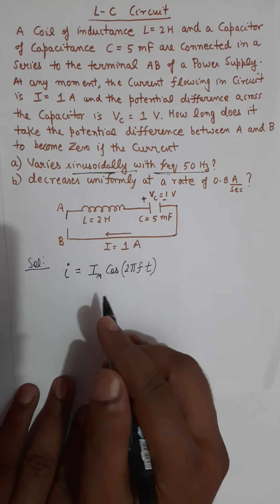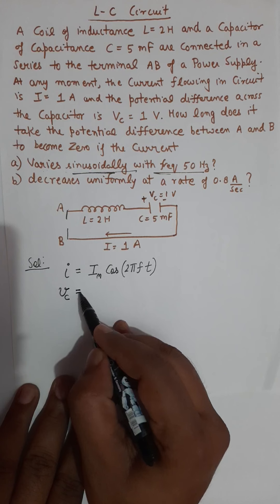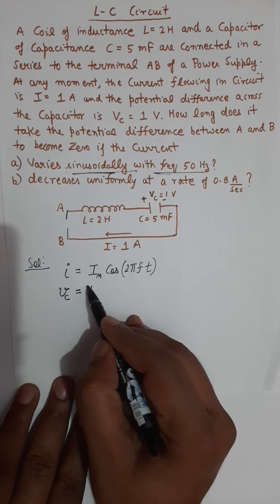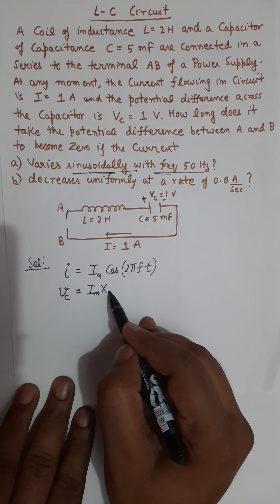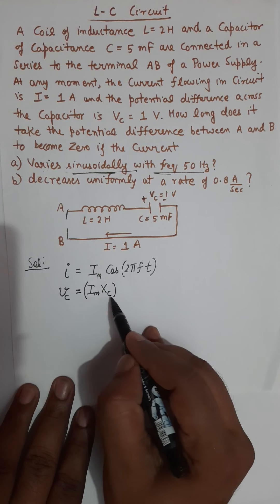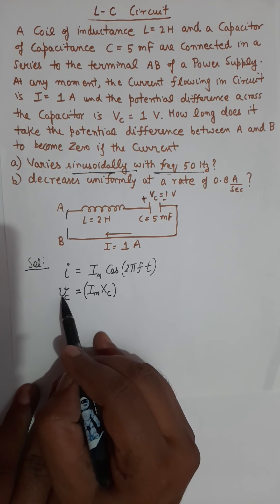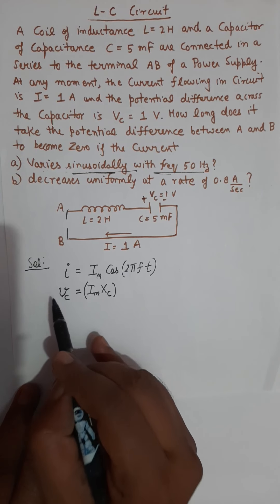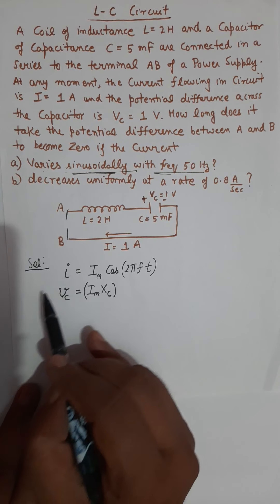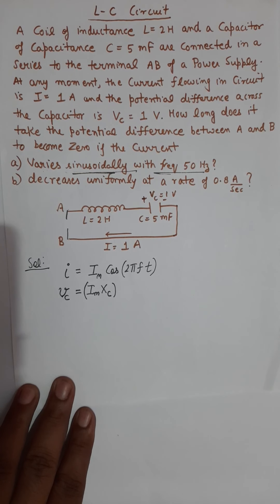You can expect the equation of current as I_max times cosine of omega, which is 2π into frequency into t. Then you can write the potential difference across the capacitor as I_max multiplied by the capacitive reactance, which defines the maximum voltage of the capacitor. The voltage of the capacitor will oscillate with a phase difference of π/2 with the current oscillation. For a capacitor, current always leads the voltage by a phase angle of π/2.